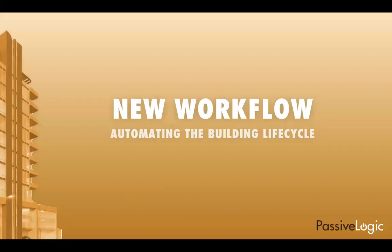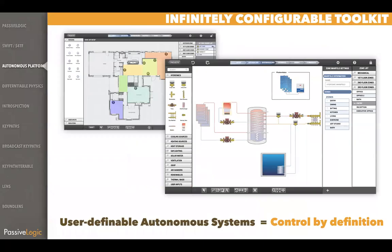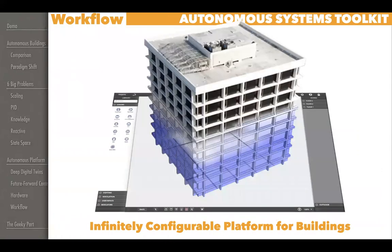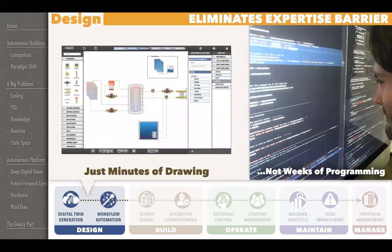From a hardware point of view, how do you make the hardware actually act the way we work? To automate the workflow that we all have, you start with control by definition — a platform that gives you the ability to make your own custom autonomous platform for your building. Instead of the programming we're doing today, we're replacing that with drawings. You're going to have to make the drawings anyway to tell the guys what they're doing in the field. So we've gotten a two-for-one, and we're doing it in minutes or hours instead of weeks — a 90% savings in time right up front.